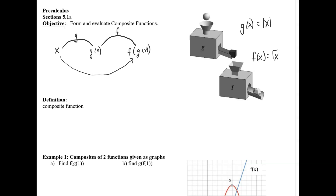We can also call this the circle function — it's just an alternative notation: f circle g. So the composite function notation is f circle g of x, sometimes written with f circle g in parentheses so it looks like a unit together, and that is the same thing as f of g of x.